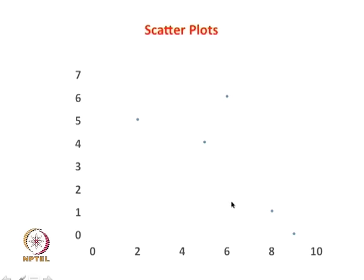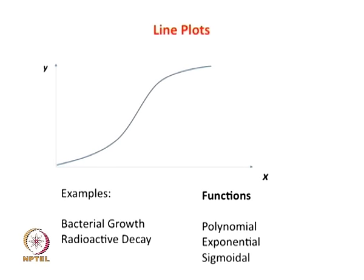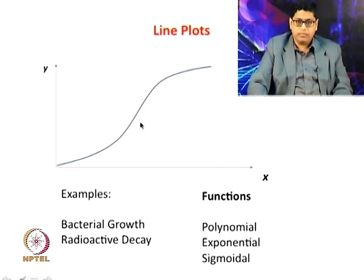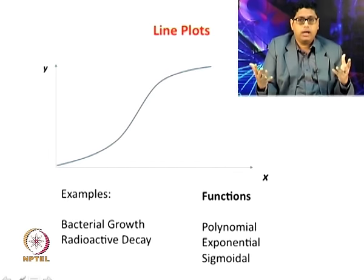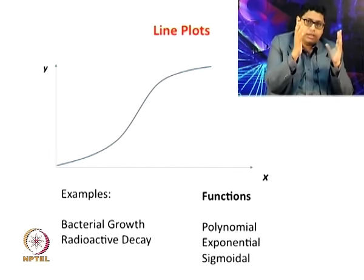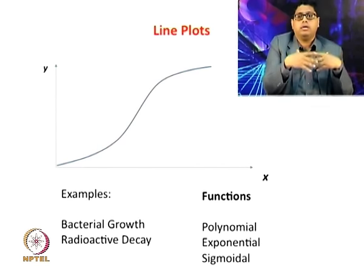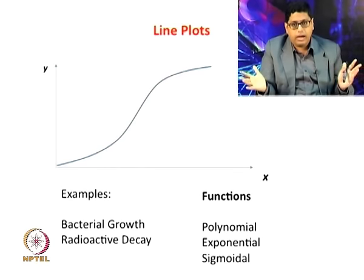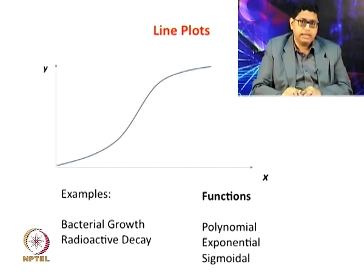If you were to connect scatter points you can generate what are typically called line plots. Here x and y are plotted with a curve that looks somewhat like an S, reminiscent of bacterial growth curves. You can have various functions which describe these line plots. It makes sense to connect points with a line when you know the underlying phenomenon is a physical process with a given time constant or mechanism — it is under control and not a completely random association.